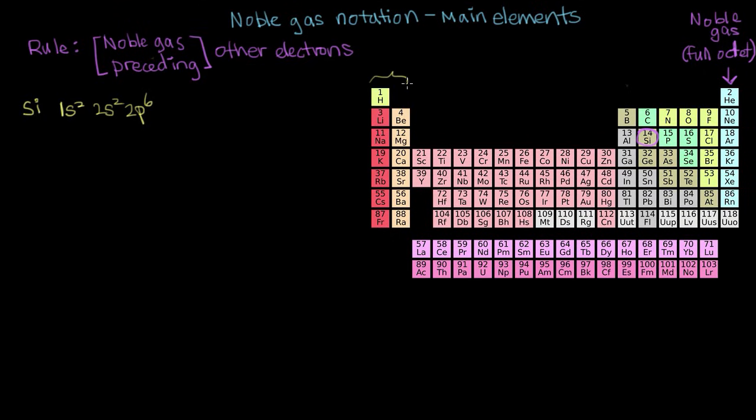So as a reminder, these are our s electrons because they're in s orbitals. These are our p electrons because they're in p orbitals. And then once we're through our 2p6 electrons, we go to 3s2. And we have two more electrons, so it's 3p2. So that's the electron configuration for silicon.